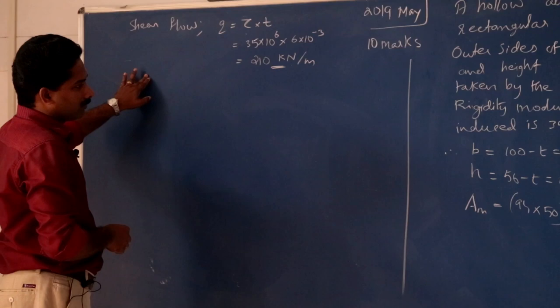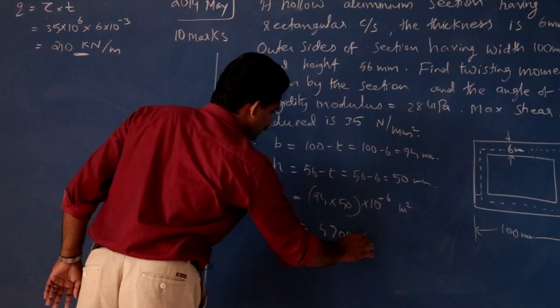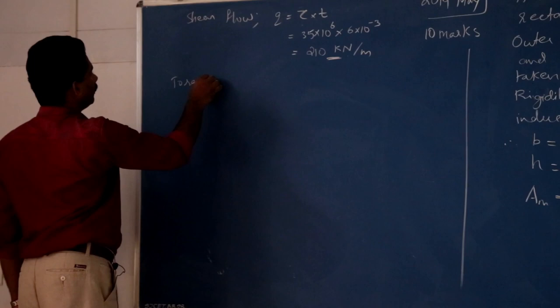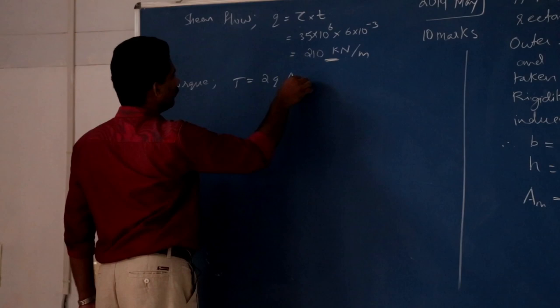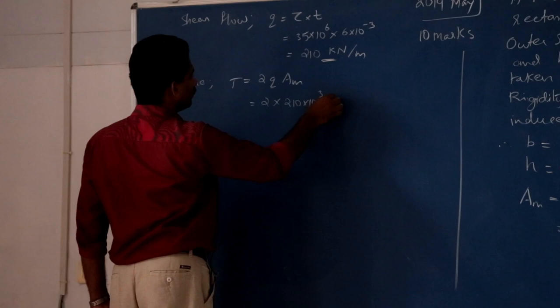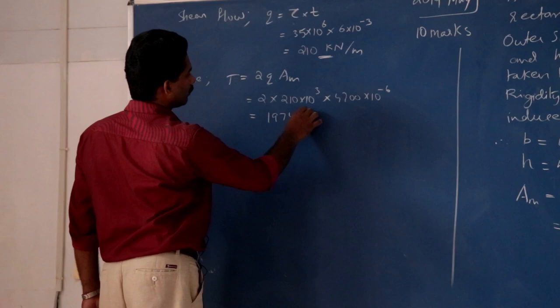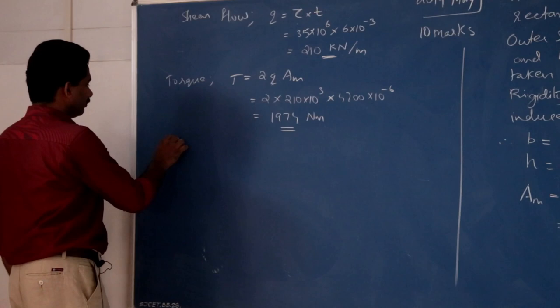Any value of Am will be 4700 into 10 raised to minus 6 meter squared. Now, we can find out the torque. Torque T is equal to 2q into Am, equal to 2 into 210 into 10 raised to 3 into 4700 into 10 raised to minus 6. So torque equals 1974 newton-meter.